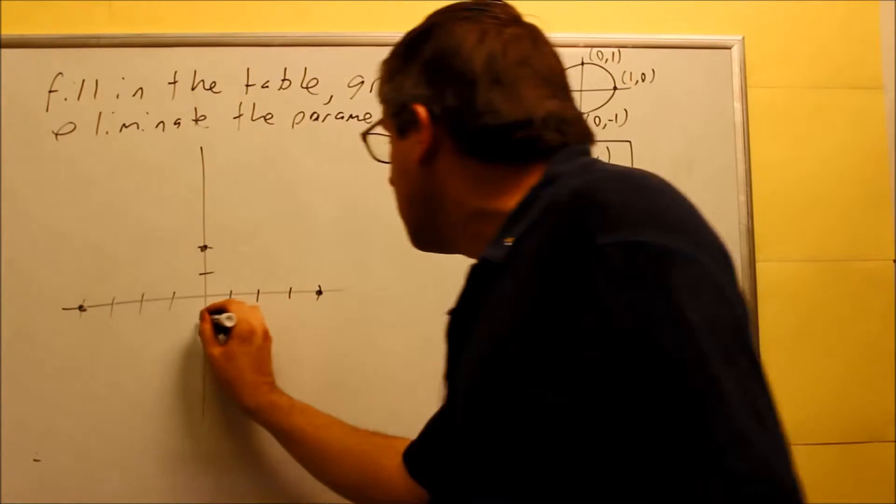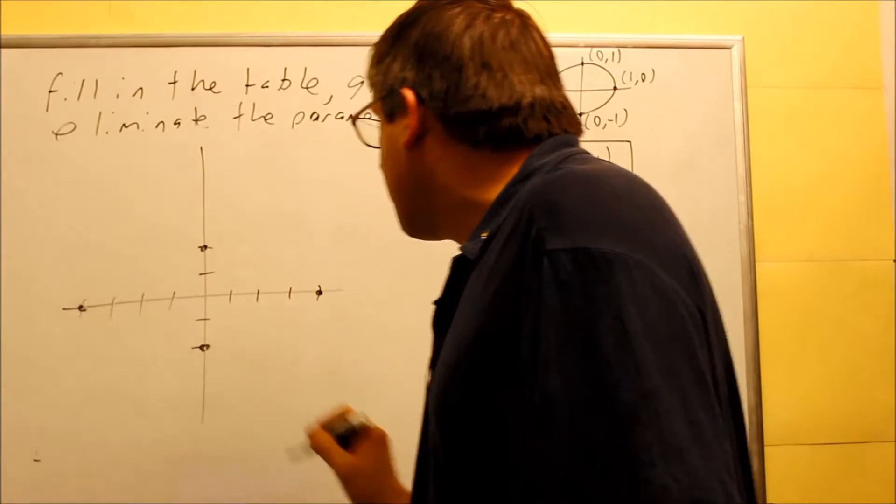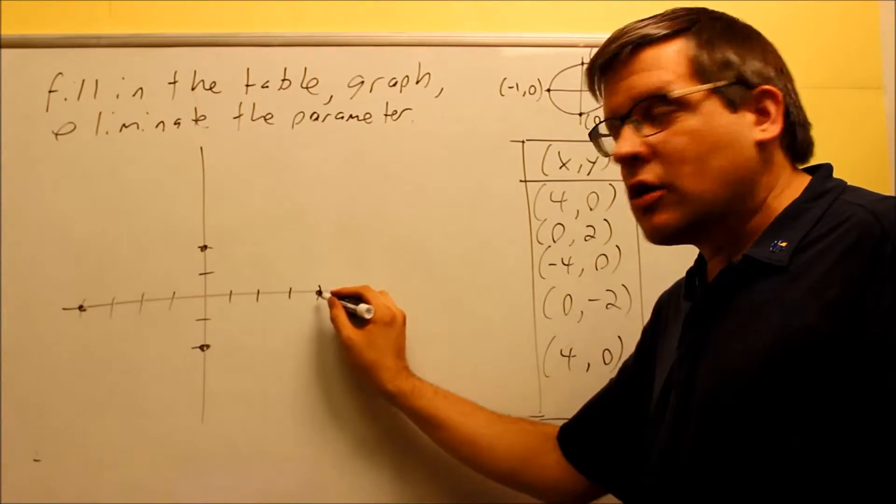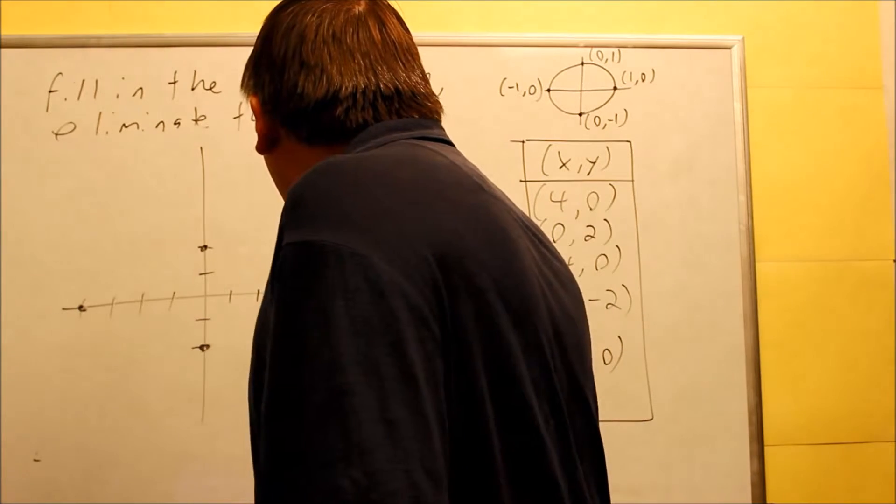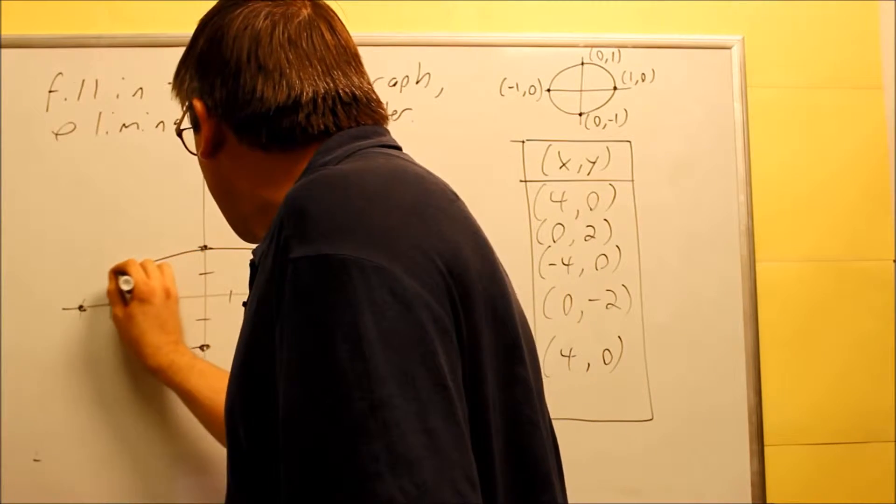Then I have (0, -2), which is here. And then it goes back to (4, 0) again, back to where we started from. So what kind of graph do we have? We actually have an ellipse here.